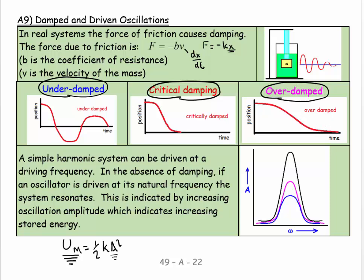Another thing I'd like you to get is that in a simple harmonic system, we can drive it at a driving frequency. I can shake something. And in the absence of damping, if an oscillator is driven at its natural frequency, the frequency that it normally wants to oscillate at for a mass and a spring, that natural frequency is determined by omega equals the square root of k over m. So it's determined by the spring constant and the mass of the oscillator. So its physicality determines its natural frequency.